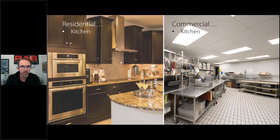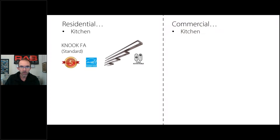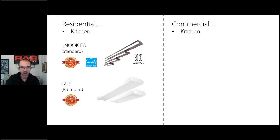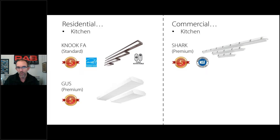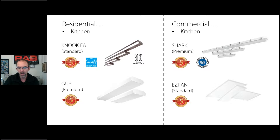The last comparison before I turn it over to Bob: when we talk about kitchens, we have a residential kitchen versus a commercial kitchen. The residential kitchen is going to have something like the Nook FA — which we recently updated, lowered the price, made field-adjustable in terms of light output and color temperature. We also have the Gus, which has a fully luminous lens on the bottom and sides. In a commercial kitchen, over areas where you're preparing food, you might need an NSF-certified product like the Shark, and in other areas of a large commercial kitchen, the EasyPan would be a good solution.